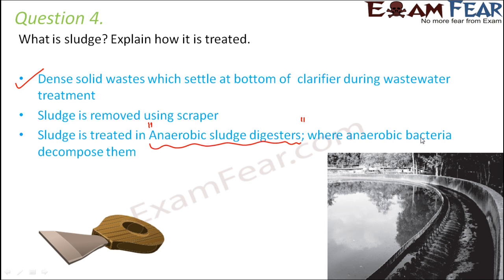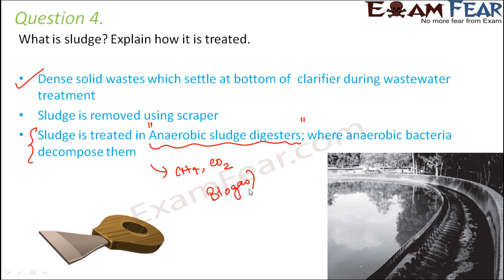During the process of anaerobic treatment of sludge, several gases like methane and carbon dioxide are produced, which are termed as biogas. This biogas is used as an excellent fuel.